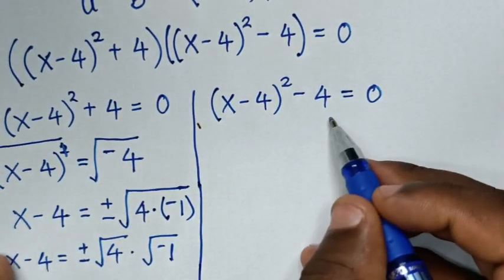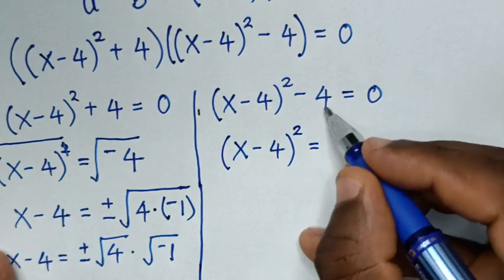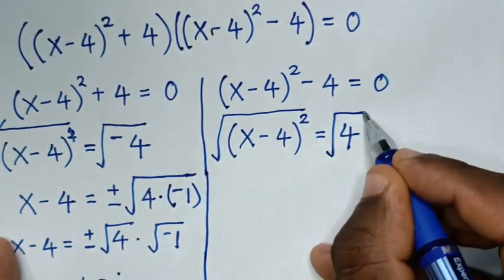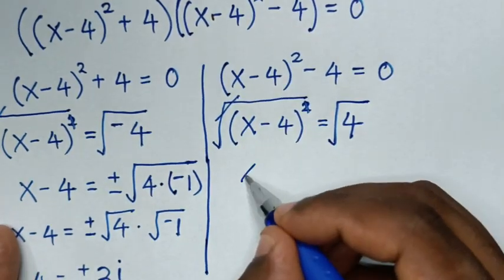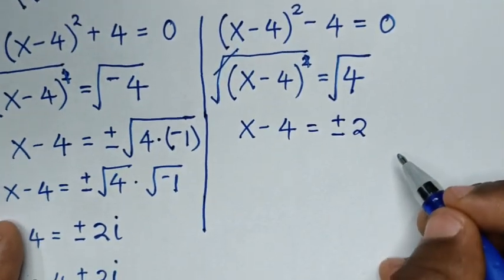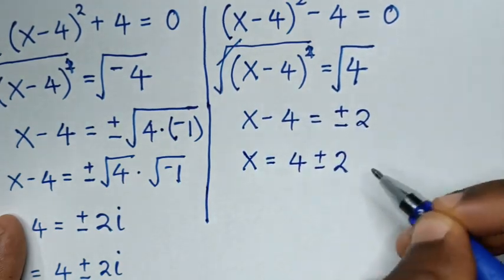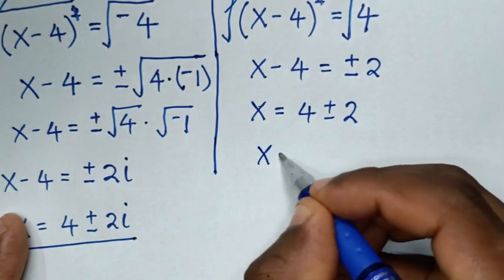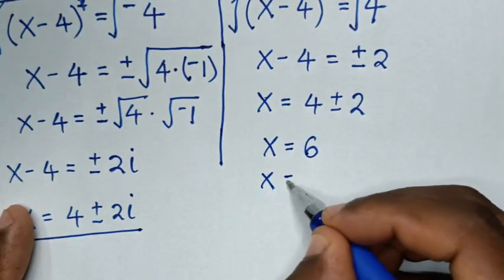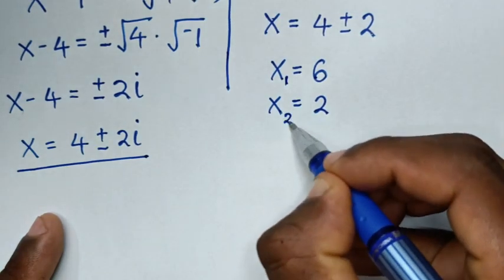Now let's solve the second solution. We'll take negative 4 to the right side, so (x minus 4) squared equals positive 4. Applying square root to both sides, x minus 4 equals plus or minus square root of 4, which is 2. Taking negative 4 to the right side, x equals 4 plus or minus 2. So the two solutions are x equals 4 plus 2, which is 6, and x equals 4 minus 2, which is 2. These are the real solutions.